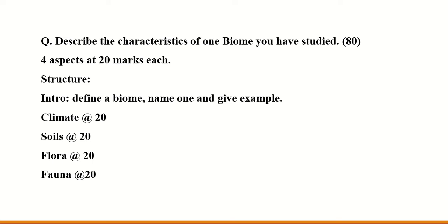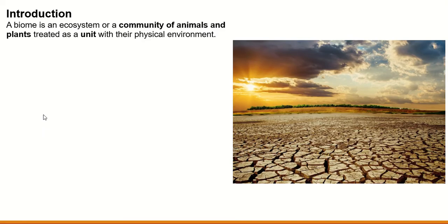So back to our answer — the structure. Today we're going to look at the intro and part of climate. So the introduction: the first thing we must do is define what a biome is. A biome is probably a new word for a lot of us. A biome is an ecosystem or a community of animals and plants treated as a unit with their physical environment.